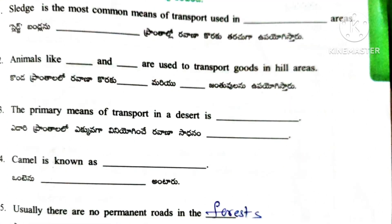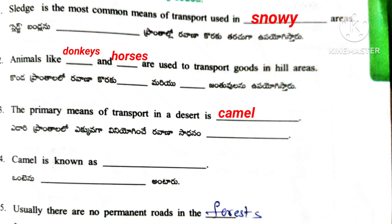Next one: Fill in the blanks. 1st one: Sledge is the most common means of transport used in dash areas. Answer: Snowy. 2nd one: Animals like dash and dash are used to transport goods in hill areas. Answer: Donkeys and Horses. 3rd one: The primary means of transport in desert is — Answer: Camel. 4th one: Camel is known as — Answer: Ship of the desert. 5th one: Usually there are no permanent roads in the dash. Answer: Forests.